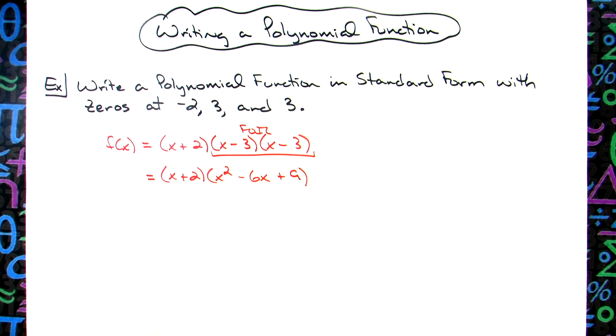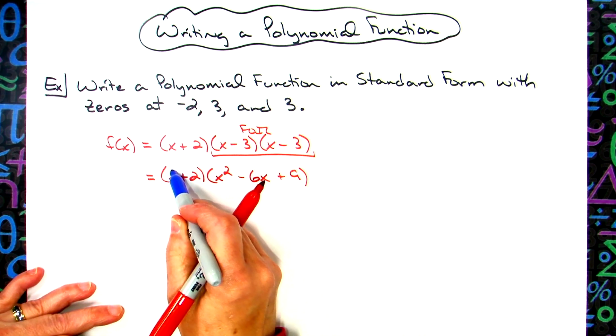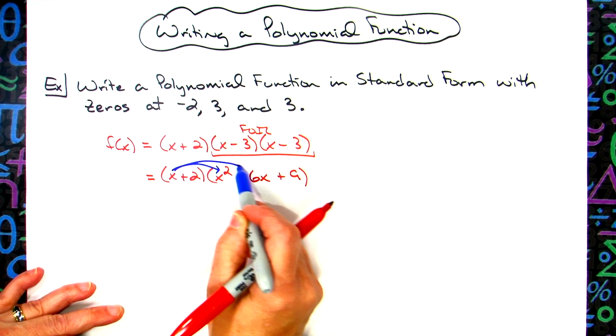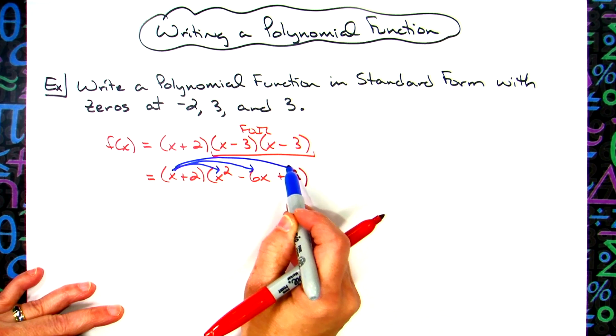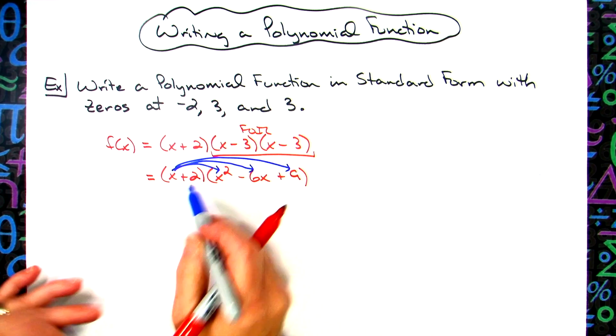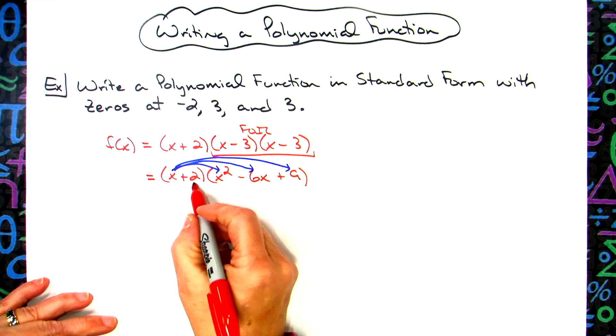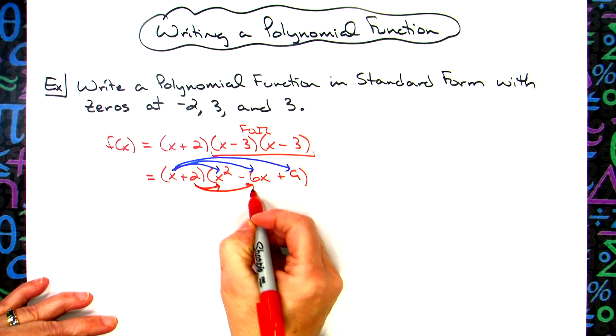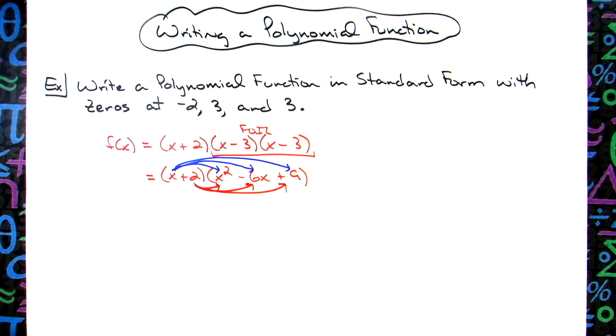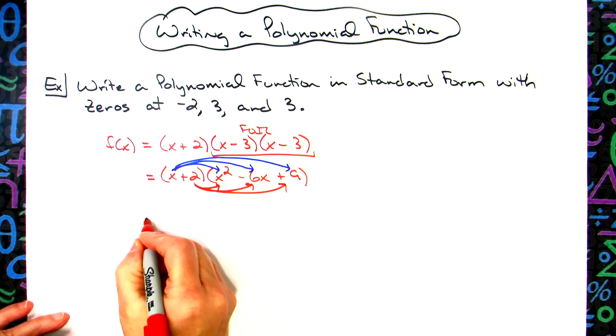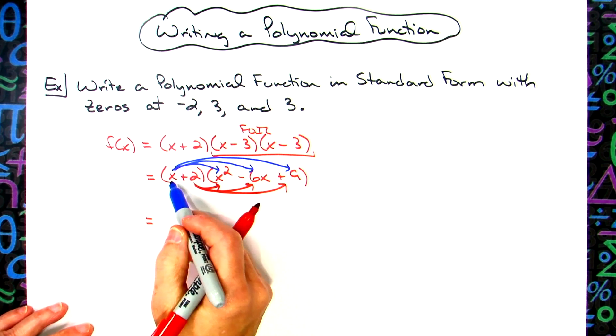At this point, then we're just going to take this x and distribute it to everything in the second trinomial there. And then we will take the two and distribute it also to every term in that trinomial. So we will do a little color coding here to be able to find our terms.